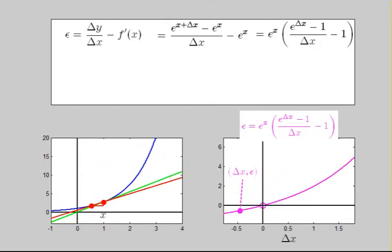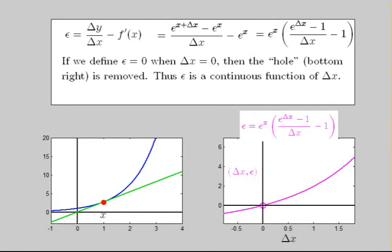Observe that epsilon contains a hole, or a removable discontinuity, when delta x is 0. So, we will fill that hole by defining epsilon to be the limit 0 when delta x approaches 0. This makes epsilon a continuous function and proves the lemma shown in blue.